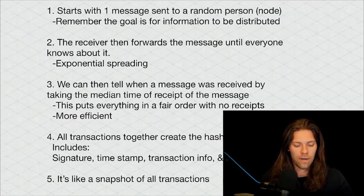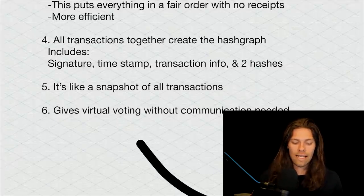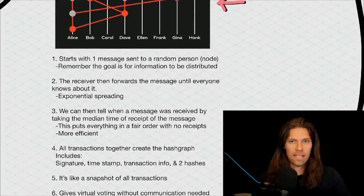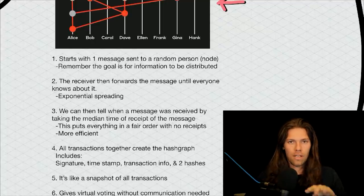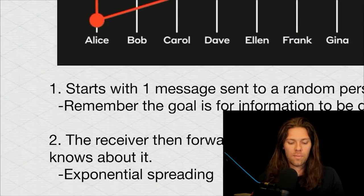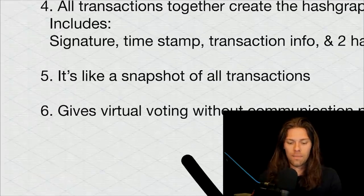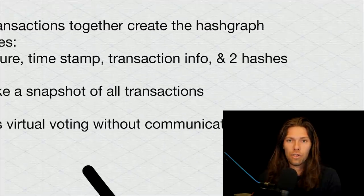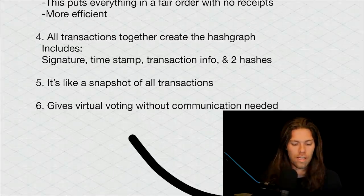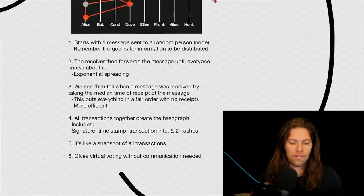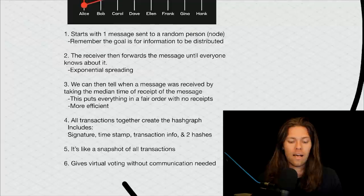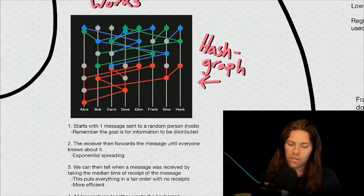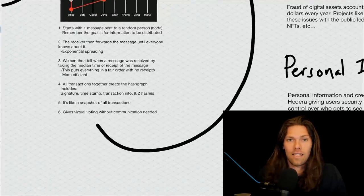Number four, all transactions together create the hash graph, which is what we have here. This is the entire graph. You can think of it as like a snapshot of all the transactions. We have this timeline just increasing over time, all the lines on the nodes. And then each circle here, like this Alice circle, contains special information. That information is the signature, the timestamp, the transaction information, and two hashes. So all the information we get on the blockchain is also stored here. It's like a snapshot of all the transactions, the hash graph that is. It also has this benefit of giving virtual voting without communication needed because we have this hash graph with all the information. So it's a very unique way to do things. It's cool that people are looking at it in different ways.